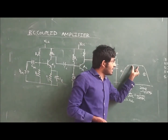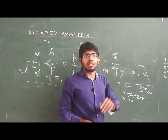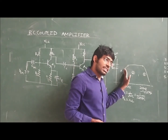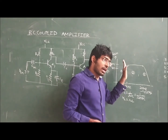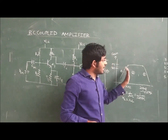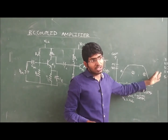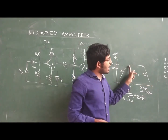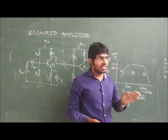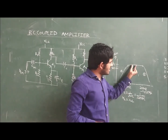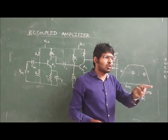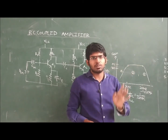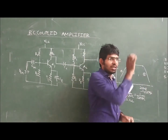Then why is the gain constant at mid frequencies? The high reactance effect and the loading effect — these two effects are being cancelled at the mid frequencies. So the RC-coupled amplifier gain is constant. This is the best range we can use for the amplification of the human voice.